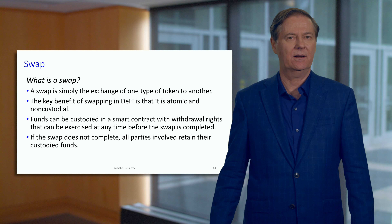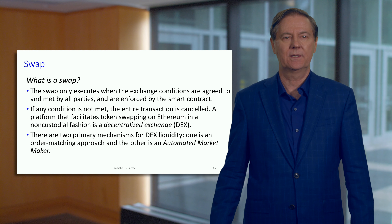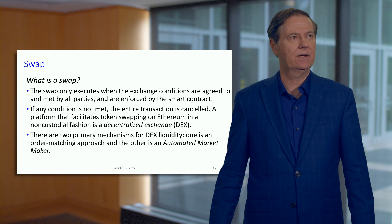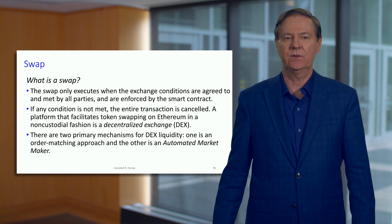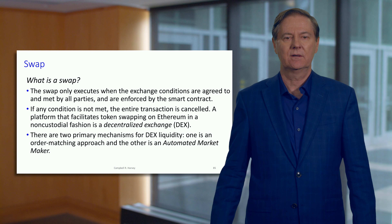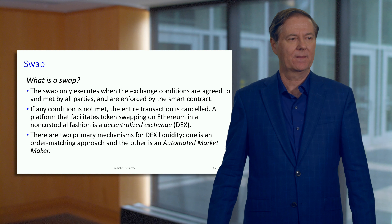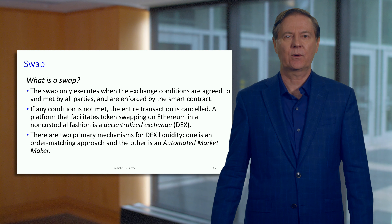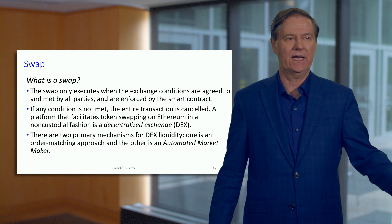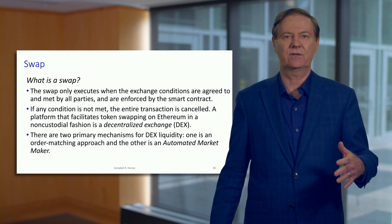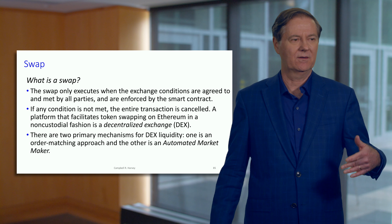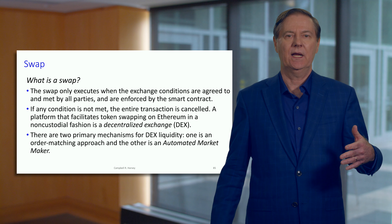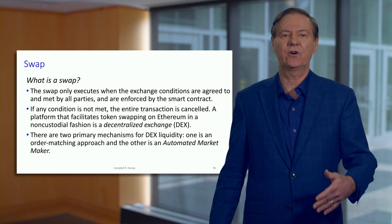Smart contracts hold custody of funds for the swap. When we do an exchange, it will only execute if all the conditions in the transaction are met. You could even put the equivalent of a limit order into the transaction — if the price is above X, then I'm not going to buy. The contract recognizes this and the transaction reverts to the original state, meaning you're not buying anything.